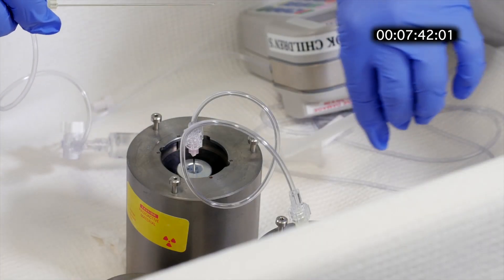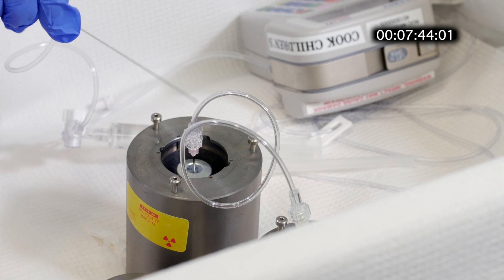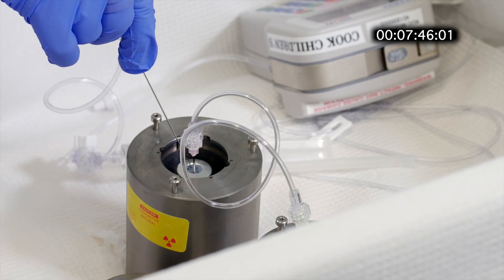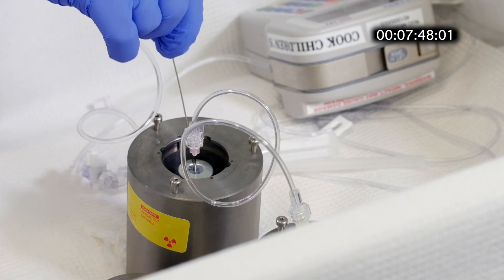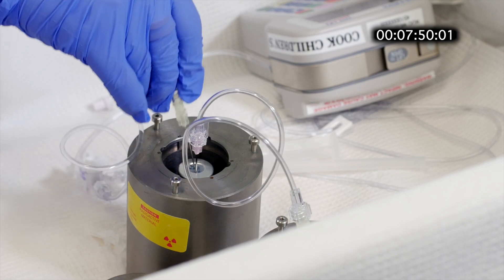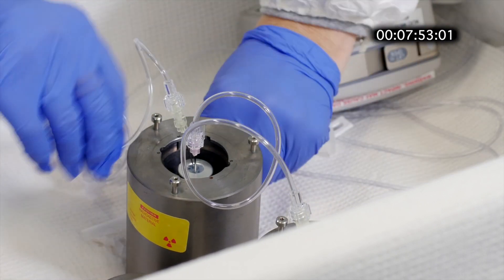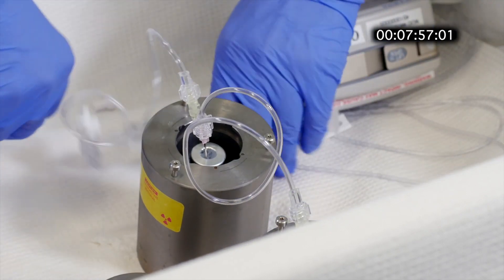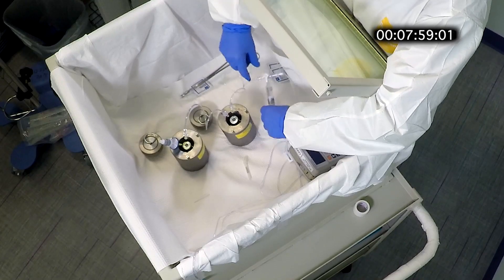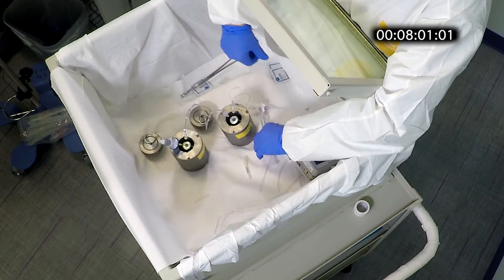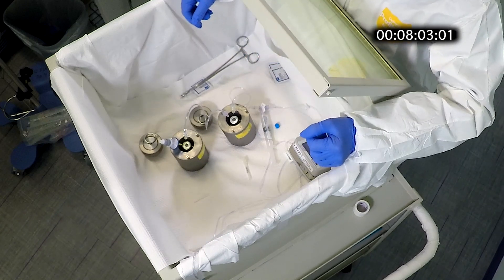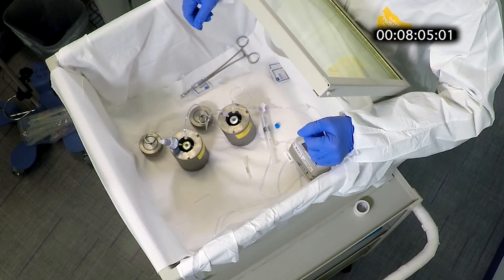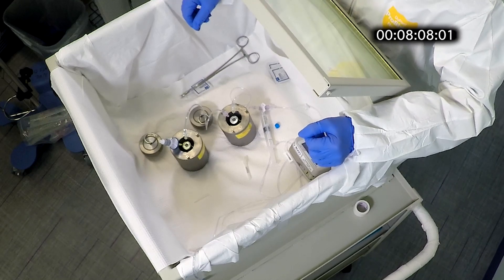So take the previously primed 12 inch line connected to the three and a half inch needle and the stopcock and insert it into the last vial. Then angle the shield so that the tip of the needle is at the bottom edge. Set the four way stopcock so that the line is clear to flow once the pump starts.